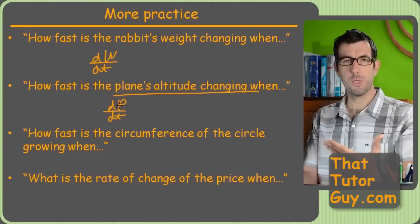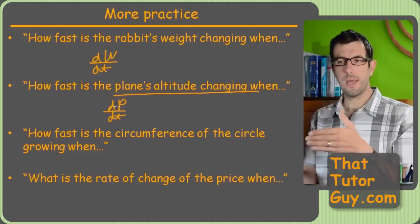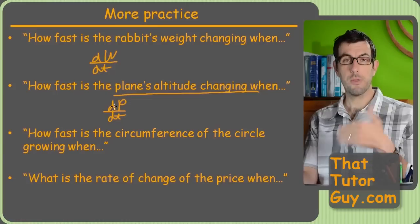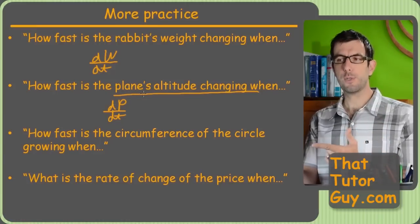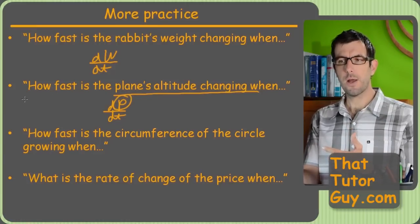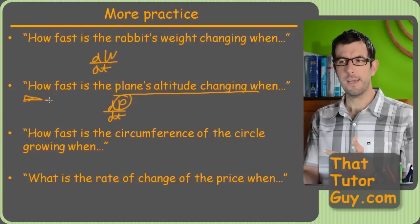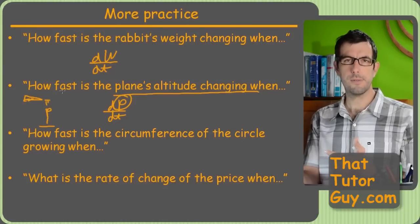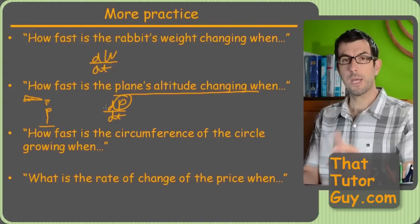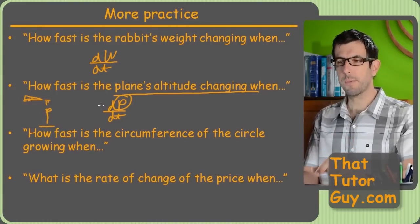And any quantities you use, you'll end up labeling on the diagram. So, if you decide to call the altitude P, you're going to have a drawing at some point, you know, maybe it'll look better than mine, of, you know, P as being the plane's altitude. Not a problem. You just got to know which letters you're using and what they correspond to.